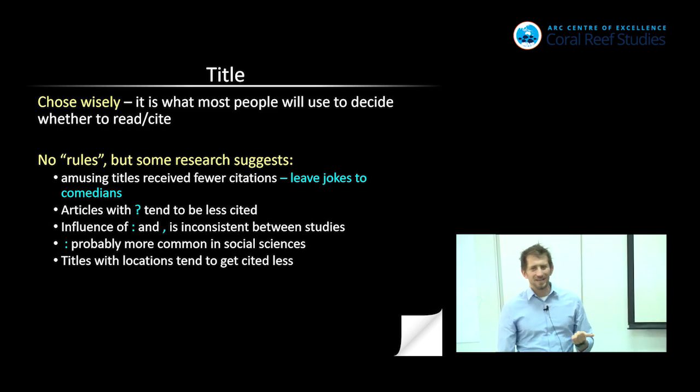Articles with question marks tend to be less cited. And the influence of colons and commas is inconsistent between studies. I would say that having a colon study is probably way more common in the social sciences. I tend to use them. I kind of like them. I have like one title and then, you know, I think it's cool, but they actually get cited less. And titles with locations tend to get cited less. And that makes sense too, because if you're not interested in Northeastern Behol, in the Philippines, you probably aren't going to actually read the paper. Now there's a delicate balance between whether you should put it in or not.